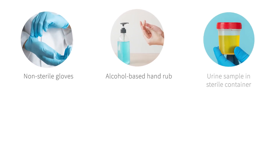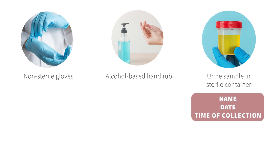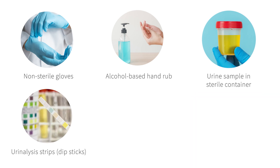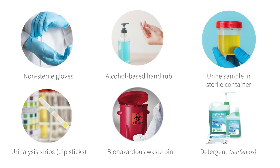Now it is time to begin gathering the equipment. We will need non-sterile gloves, alcohol-based hand rub, and a urine sample in a sterile container. This is where we should confirm the label has the patient's name, the date, and time of collection. The urinalysis strips — it is important to check that the reagent sticks have been stored according to manufacturer's instructions and are not expired. The biohazard waste bin. And a detergent or disinfectant for surfaces, such as Syrfanios, which should be clearly labeled with a date and should not be expired. Gathering our equipment ahead of time helps minimize disruptions during the procedure, which ensures the accuracy of the results.